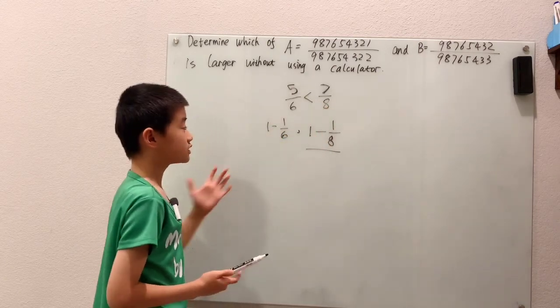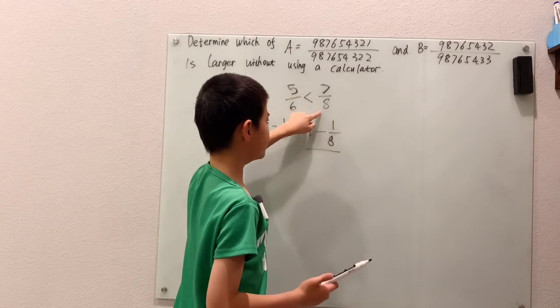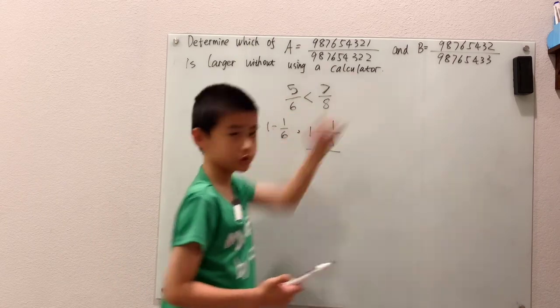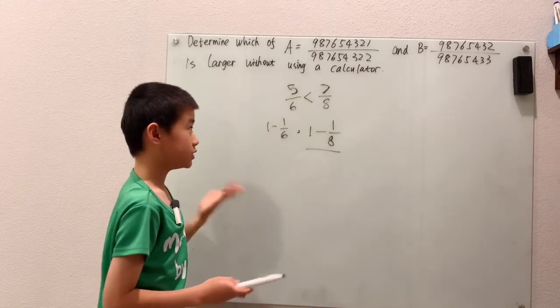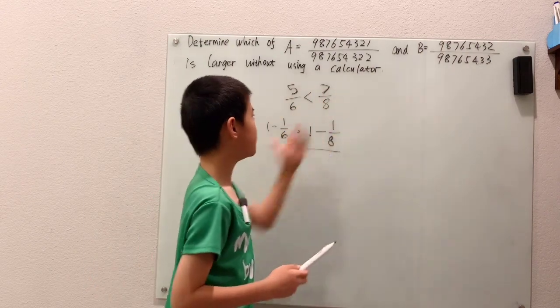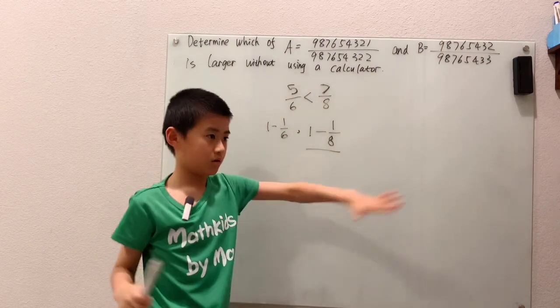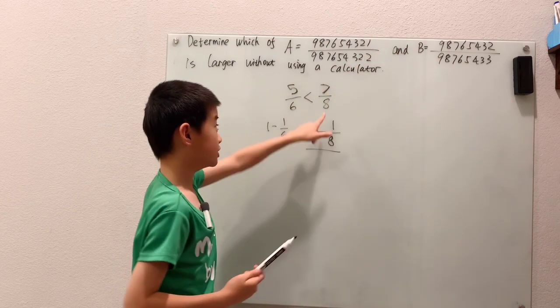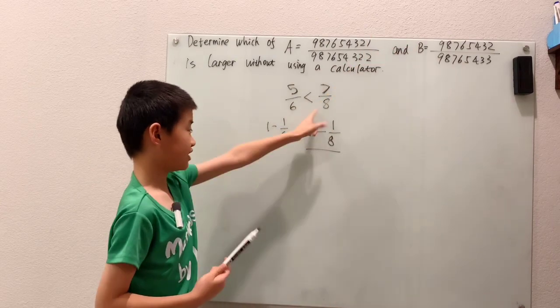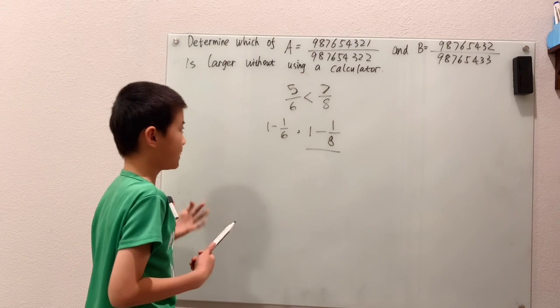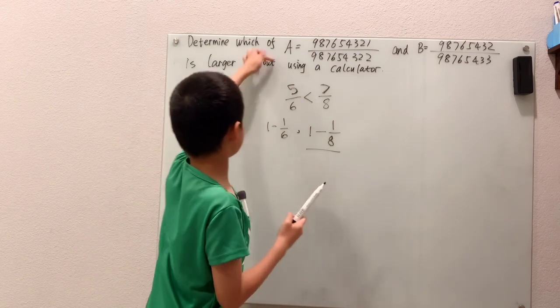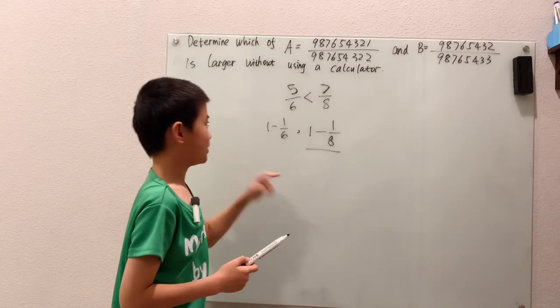Well, 1/8 is clearly less, which means 7/8 is closer to 1 than 5/6. So 7/8 is to the right of 5/6 on the number line, and the farther right you go, the larger the number becomes. So 7/8 is greater than 5/6. And now I have an idea about how to handle these fractions up there.